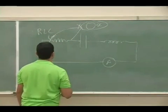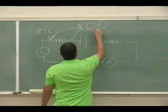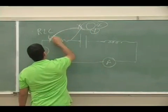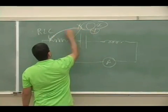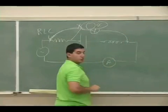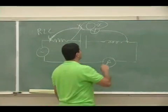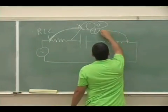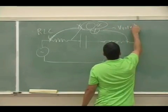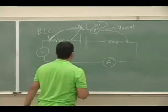The Y outlet of the oscilloscope with its common outlet is going to be here to measure the total voltage of the circuit. So the Y outlet is going to measure the total.